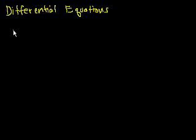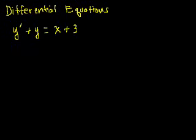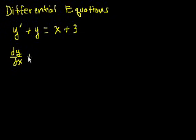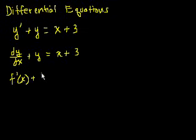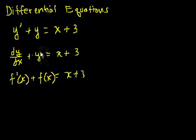For example, let's say y prime plus y is equal to x plus 3. Here, the unknown function is y. We could have written it as y of x, or written this as dy/dx, the derivative of y with respect to x, plus y equals x plus 3. We also could have written f prime of x plus f of x is equal to x plus 3. All of these are valid ways of writing this exact same differential equation.